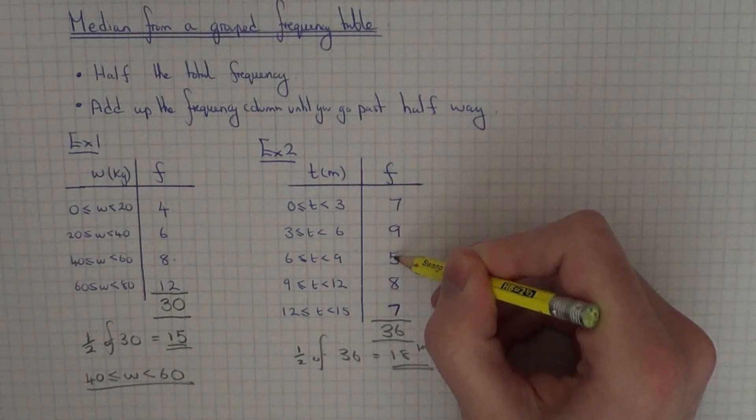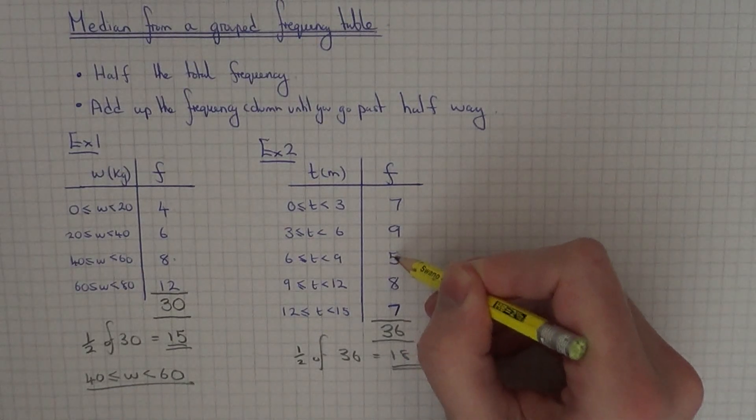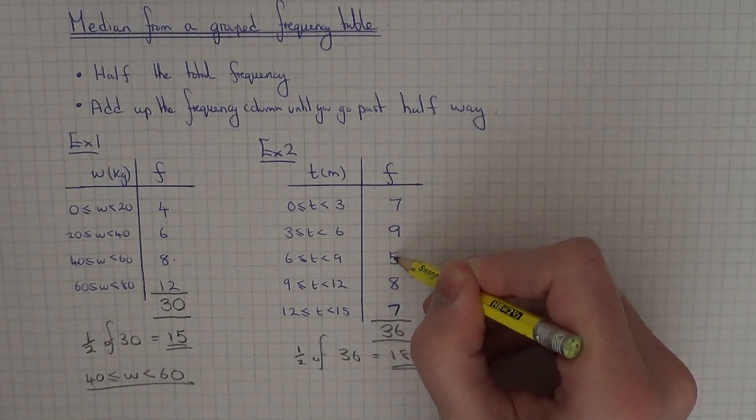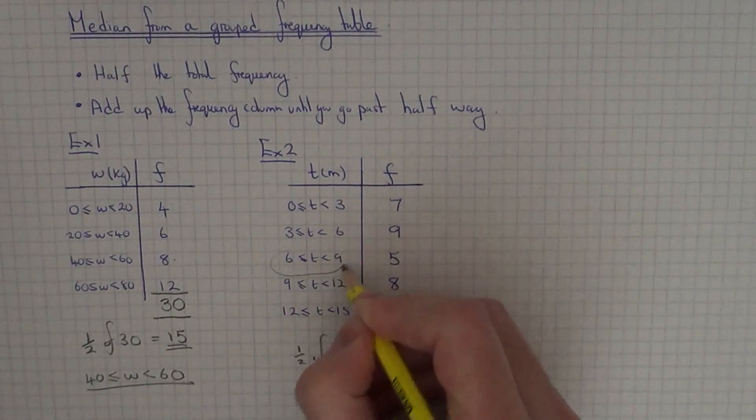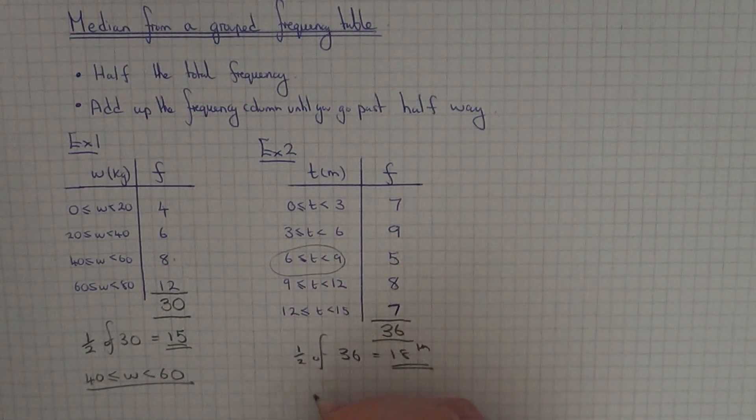Add on 5 will take us to 21, so we've gone past 18 in this one here. The median class interval will be 6 up to 9 minutes.